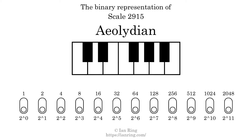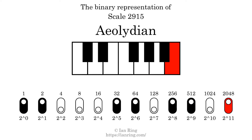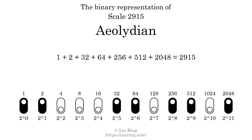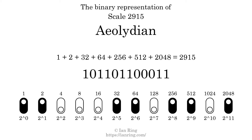The binary representation of this scale is determined by mapping tones of the scale to binary digits. Each binary digit represents a power of 2. To get the scale number, we add the powers of 2 together. The powers of 2 that are present in the scale, all added together, equals 2915. That is why the scale number, in decimal, is 2915. The scale number not only enumerates the scale with a unique index, but it also literally describes the tonal content of the scale, represented as a binary number in base 2.